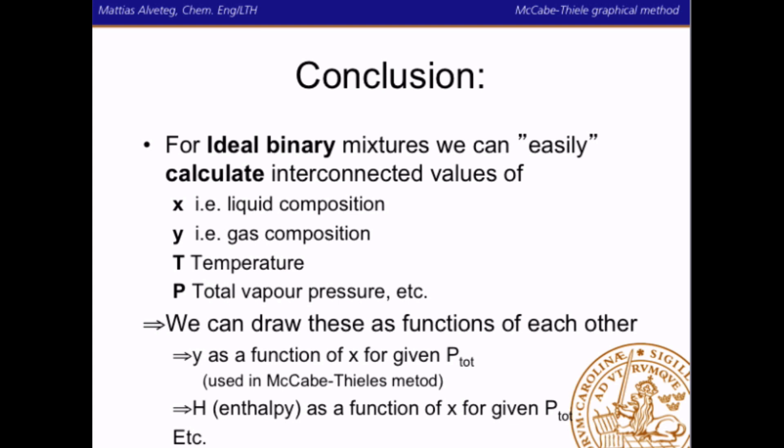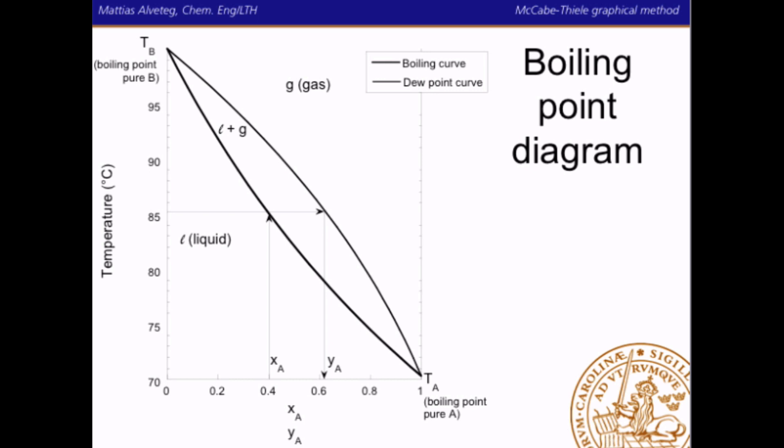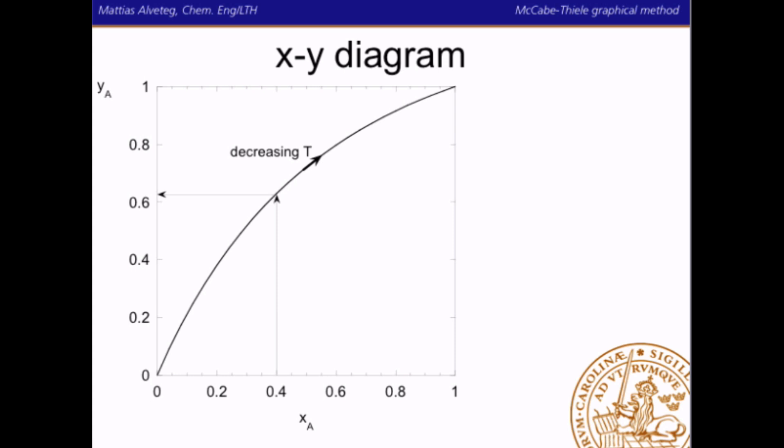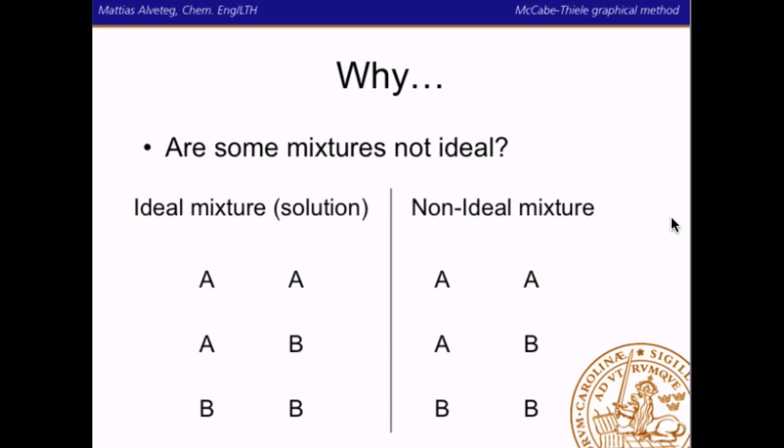We can get diagrams like the boiling point diagram, but in the McCabe-Thiele graphical method we will use the x-y diagram, where we have the liquid composition on the x-axis and the gas composition on the y-axis. This assumes that we have a boiling liquid which is in equilibrium with a condensing gas. We have already mentioned in a previous screencast that you need to use activity coefficients if you have a non-ideal mixture, if you want to calculate this kind of diagram.